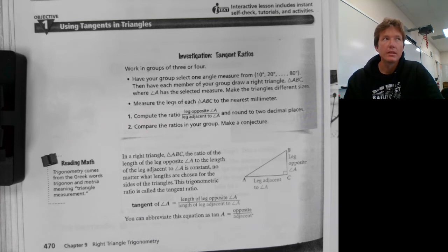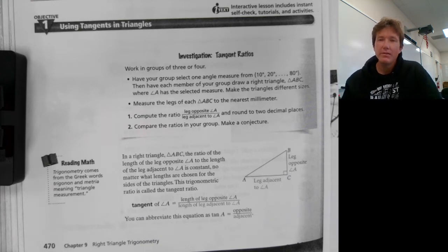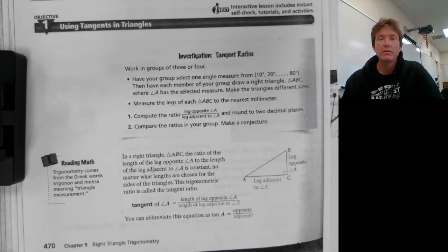The second ratio we're going to talk about is sine, which is the opposite side over the hypotenuse. This ratio must be equal to or less than one, and the reason for that is because a side can never be greater than the hypotenuse. It can be equal to one only if it's not really a triangle — if it's just a straight line, then it's equal to one.